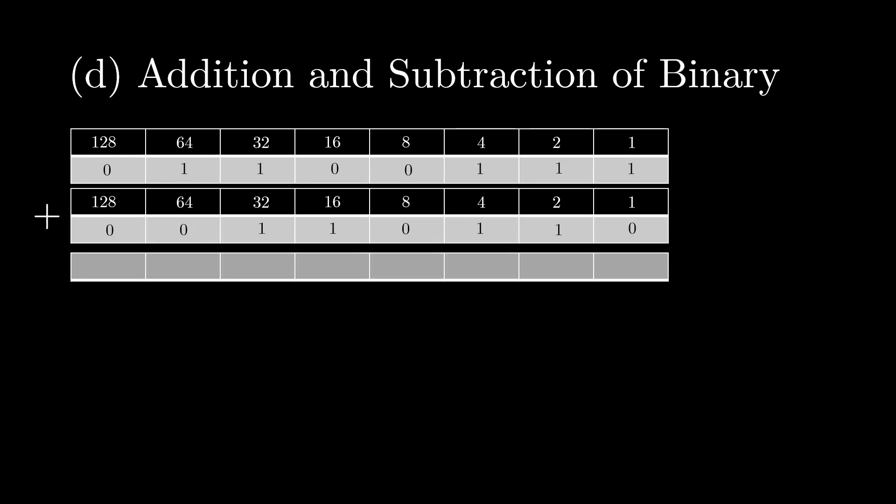Now onto addition and subtraction of binary numbers. I showed this a bit when I was doing two's complement, but in this case, I'll go more in depth. So adding 2 binary numbers is the same as adding in denary, but in this case, we're in base 2. So if we start from the right-hand side, 1 plus 0 equals 1. 1 plus 1 equals 2, but in binary, we can only have 1s and 0s, right?